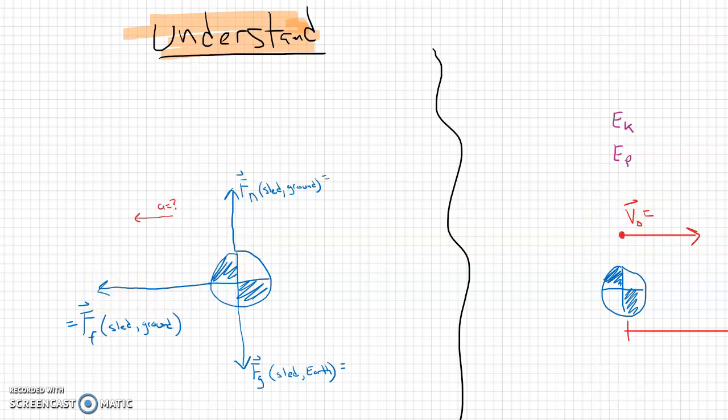Now, a couple things that might come in handy here. First of all, the force of gravity is mass times gravity, and the force of friction we can calculate by taking mu times the normal force. And that's just magnitude, so we don't need to worry about the vector symbol there.